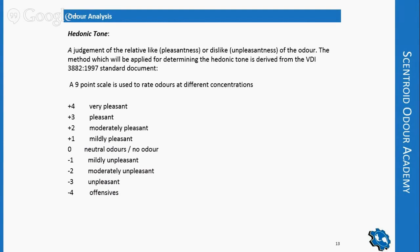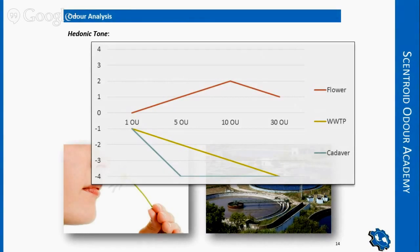A minus four is completely offensive — something you cannot tolerate. A plus four would be very pleasant, like the smell of fresh bread in your own house. What is unique about hedonic tone is it's not done at one particular odor concentration, but at different concentrations, so you can see how an odor behaves as it becomes stronger. Let's look at our example with the flower.